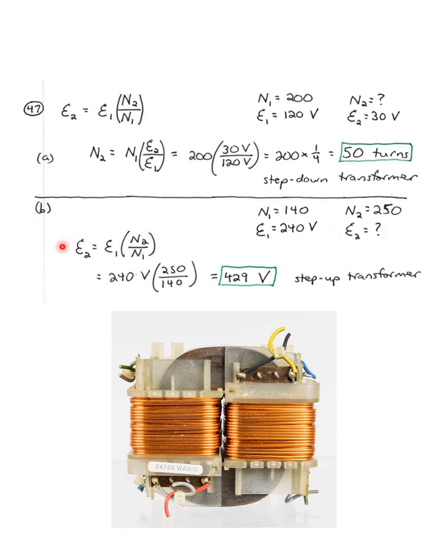So, we'll just start with this equation, E2 equals E1 times N2 over N1. And we want to solve for E2. So, 240 volts times the ratio of 250 over 140. This becomes a step-up transformer. More coils in the secondary is going to be a greater voltage according to the ratio of the turns. And so, we get 429 volts.